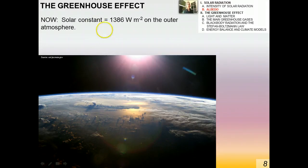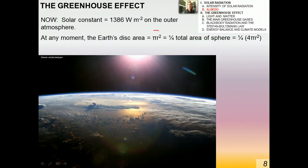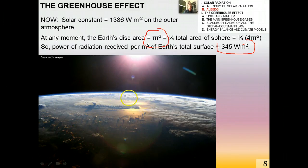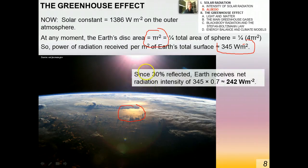The solar constant at the outer atmosphere is about 1,400 watts per square meter. At any moment, the Earth's disk area is pi r squared, which is one-quarter the total surface area of a sphere. This is where the factor of one-quarter comes from in calculating average insolation. The power of radiation received per square meter over Earth's total surface is therefore about 345 watts per square meter. An image from the International Space Station shows how clouds and the angle of the Sun both affect insolation on the surface.